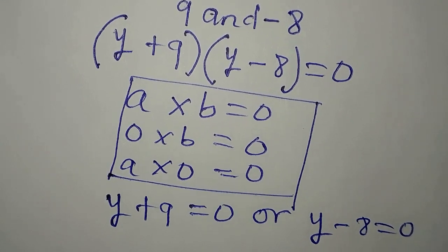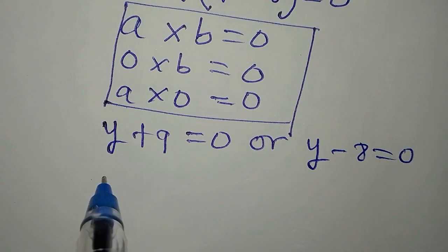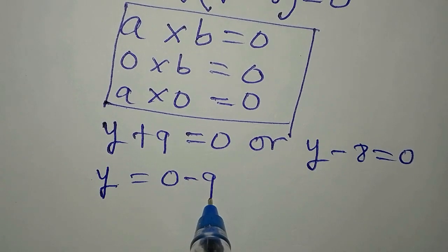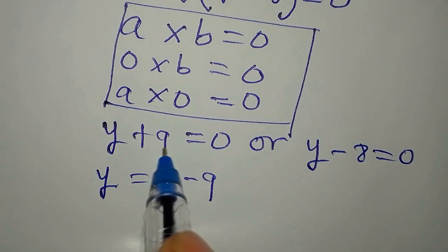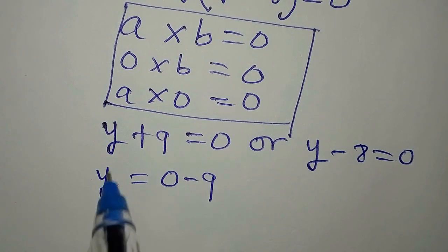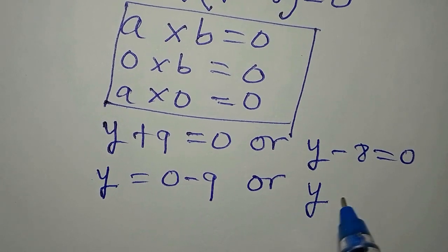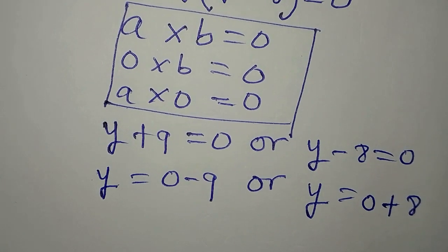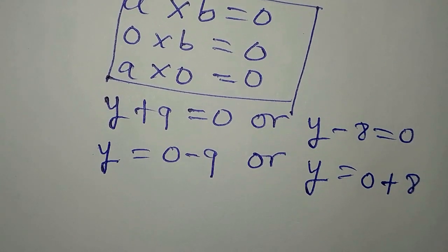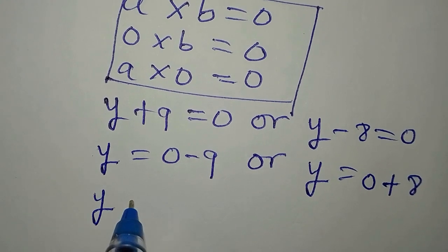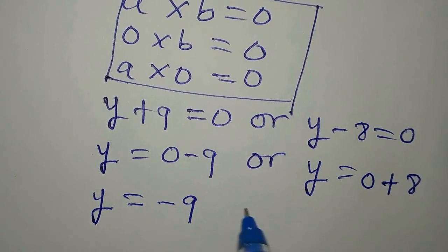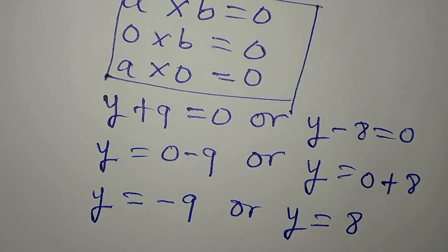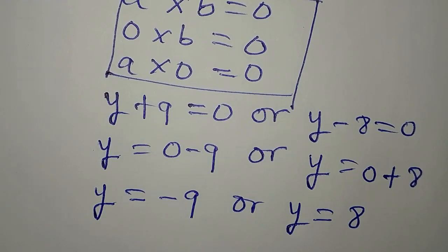Applying this to the problem, we will have y plus 9 equals zero, or y minus 8 equals zero. From the first, y equals zero minus 9, which is minus 9. From the second, y equals zero plus 8, which is 8. So y equals minus 9 or y equals 8.